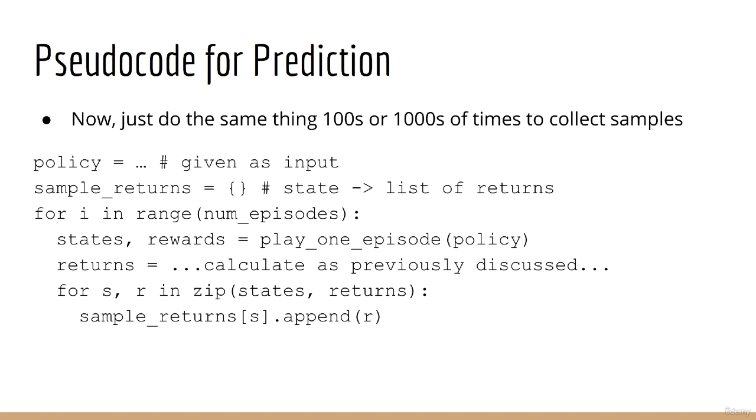So how do we put the above algorithm into pseudocode? Well, that's simple. Everything we just did, now we just do it in a loop. Do the thing we just did several hundred or several thousand times. Then, for each state, take the average return.